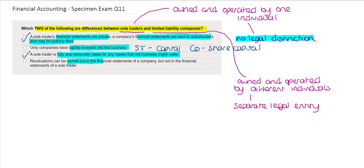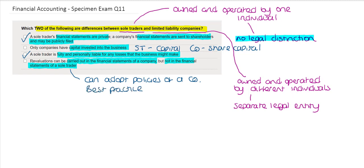The final statement says that revaluations can be carried out in the financial statements of a company but not in those of a sole trader. A sole trader does not have to follow accounting standards as a company would, however they can adopt the policies of a company — it is seen as best practice even if there is no obligation. As a result, revaluations may take place within a sole trader's financial statements. Reviewing this question, the two differences between sole traders and limited liability companies are the first and third options.